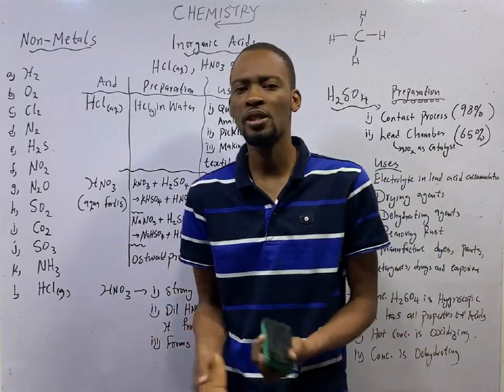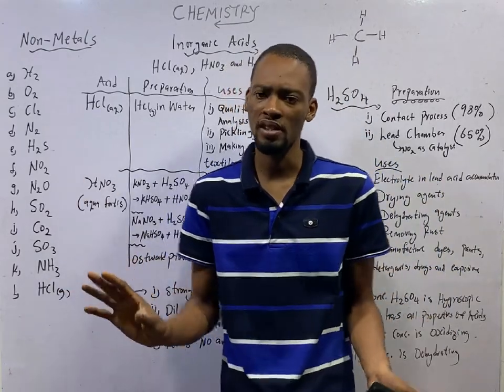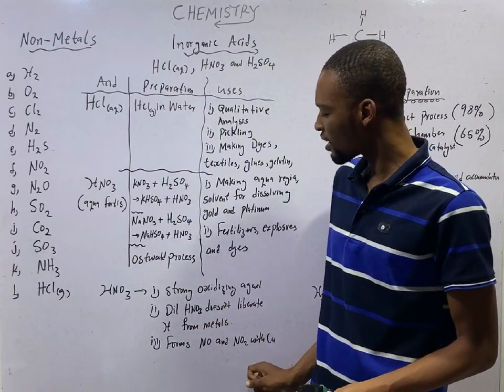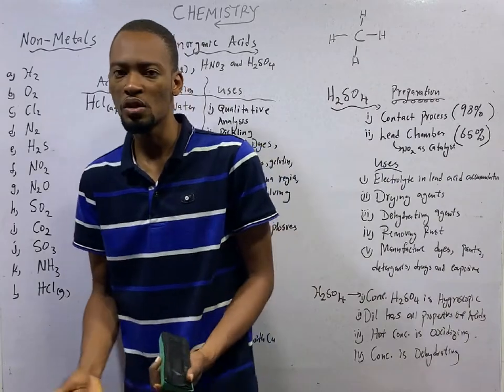So it does not give space for the hydrogen gas to even exist. Besides that, dilute HNO3 has all other properties of acid. And when it reacts with copper, it forms NO and NO2.